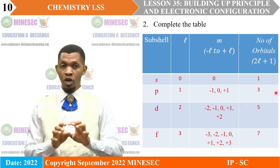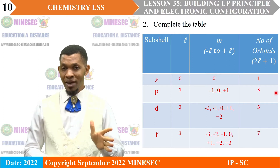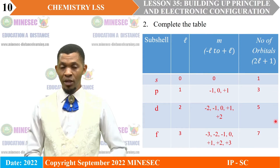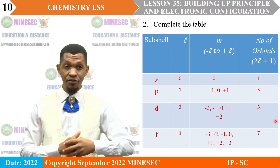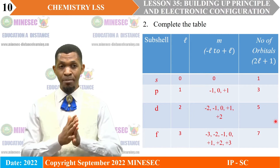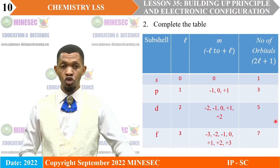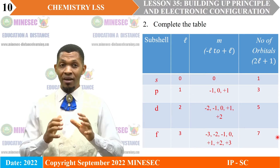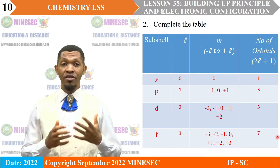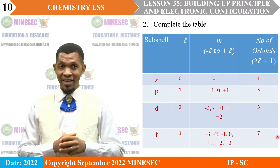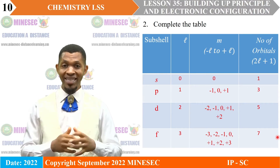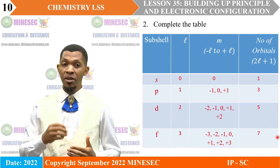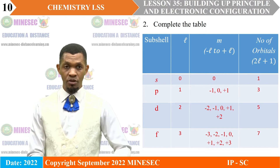Notice that the three orbitals correspond with the number of magnetic quantum numbers, because each of those numbers describes the orientation of a particular orbital in space. For the D sub-shell, there are five orbitals with magnetic quantum numbers negative two, negative one, zero, plus one and plus two, and the azimuthal quantum number is two. For the F sub-shell, the azimuthal quantum number is three, and there are seven orbitals with magnetic quantum numbers negative three, negative two, negative one, zero, plus one, plus two and plus three. So the table is correctly filled.